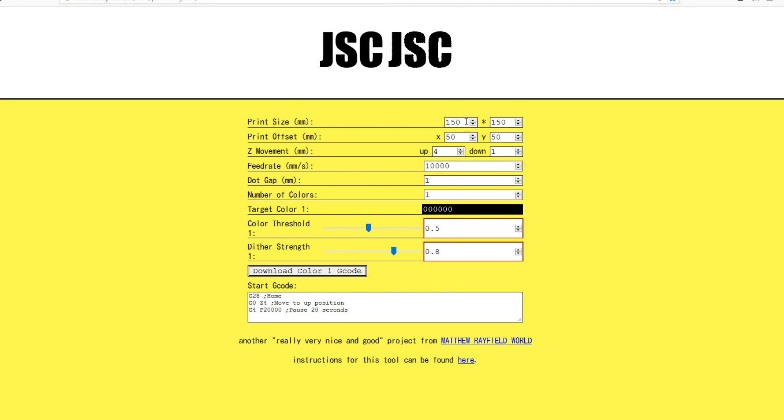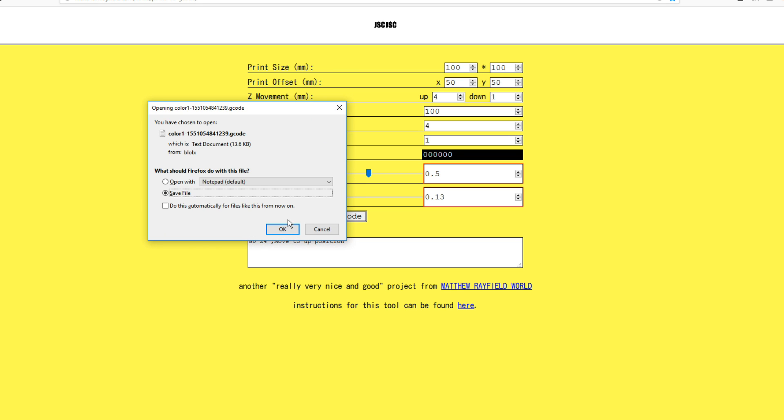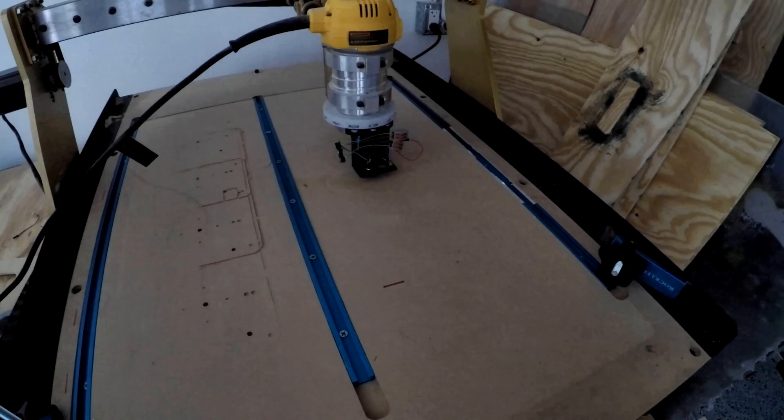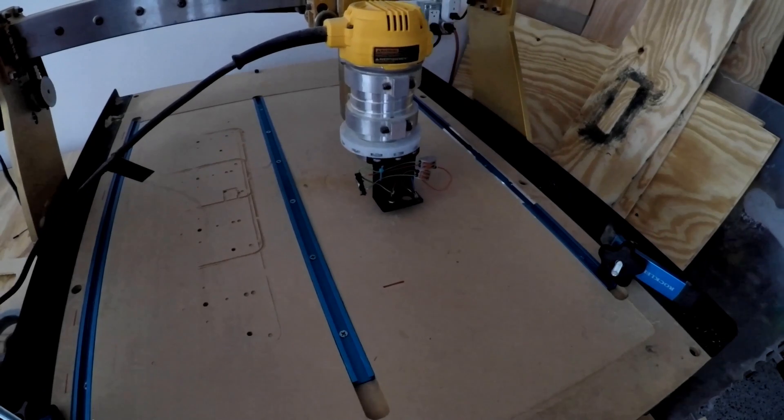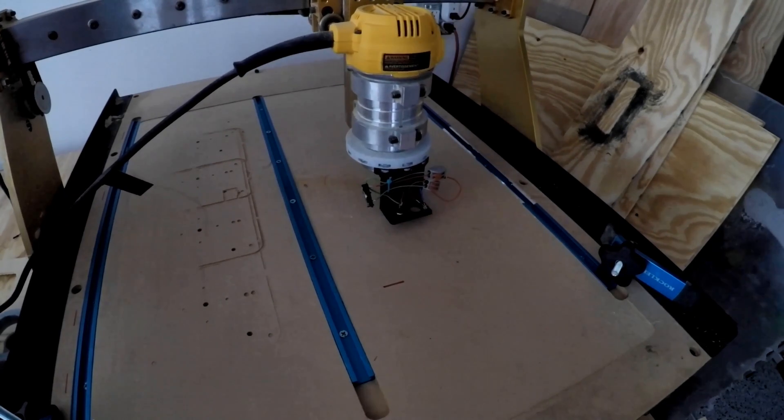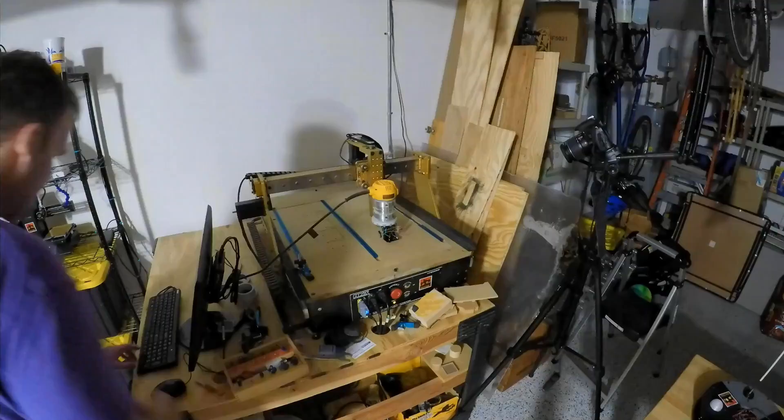So in theory that should make a dot instead of ink, it's just a dot in light. I went ahead and put an image of my initials into the web app by Matthew Rayfield, and from there it spelled out JSC. I was just testing it there during the day, and then I waited until night, so everything was really really dark in my garage to try to actually do the light graffiti.